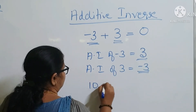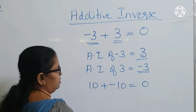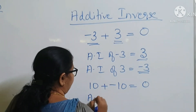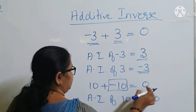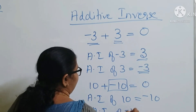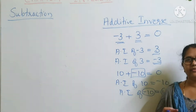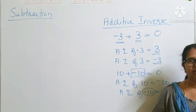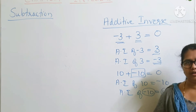Similarly, 10 plus minus 10 is equal to 0. The additive inverse of 10 is equal to minus 10, since their sum is 0. And the additive inverse of minus 10 is equal to plus 10. The additive inverse of an integer is obtained by changing the sign of the integer.